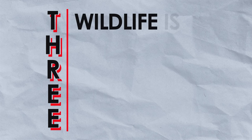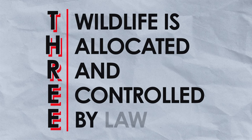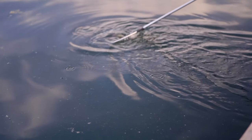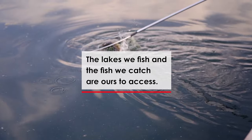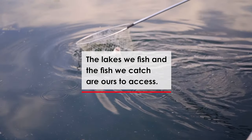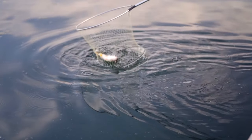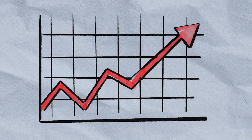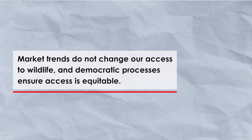Three: wildlife is allocated and controlled by law. Wildlife — the lakes we fish and the fish we catch — are ours to access. Market trends do not change this. Democratic processes and public input help ensure access to resources is equitable.